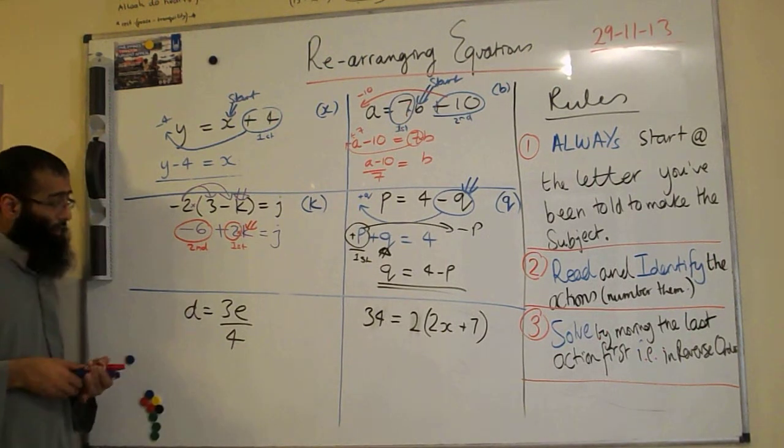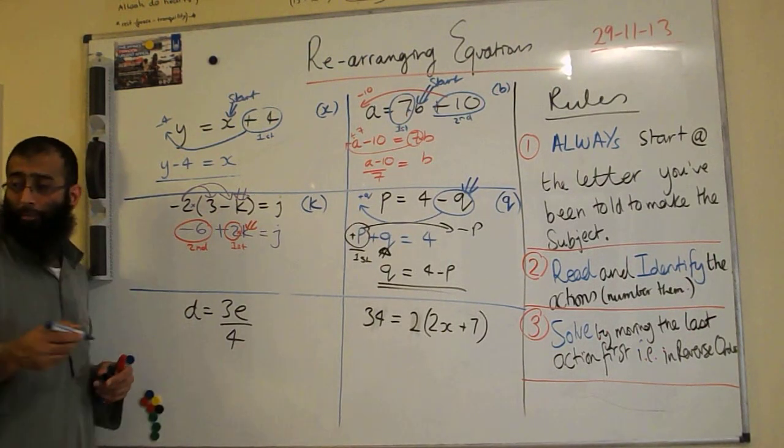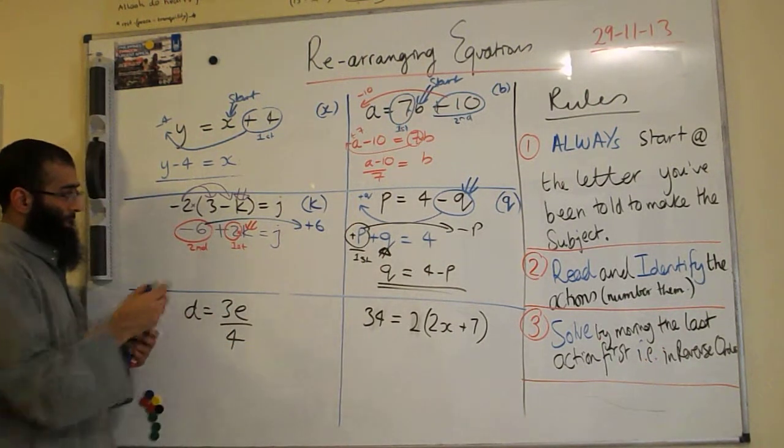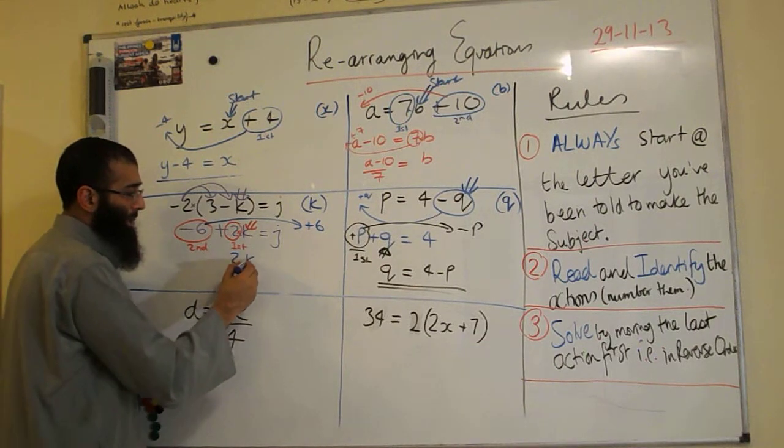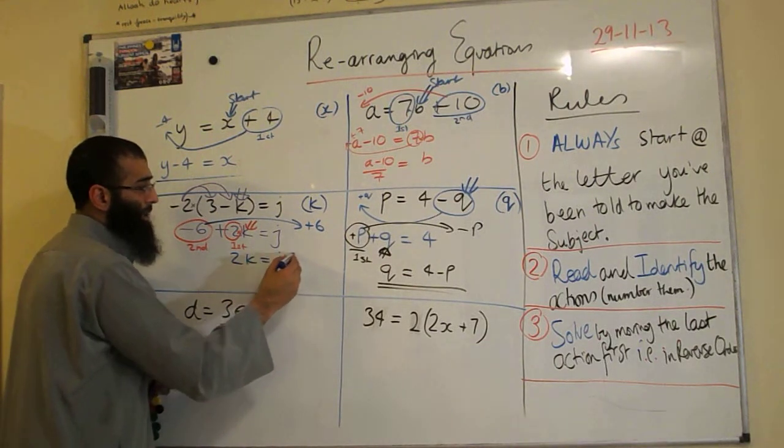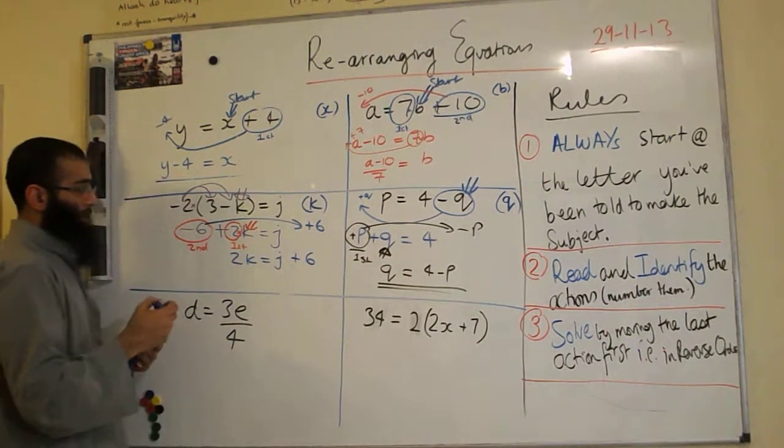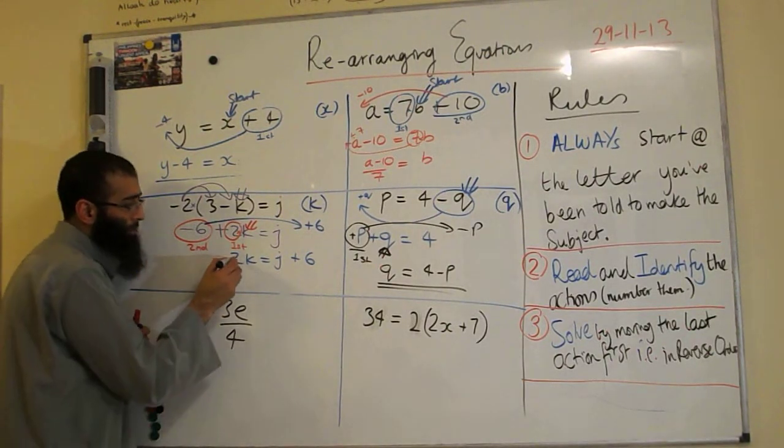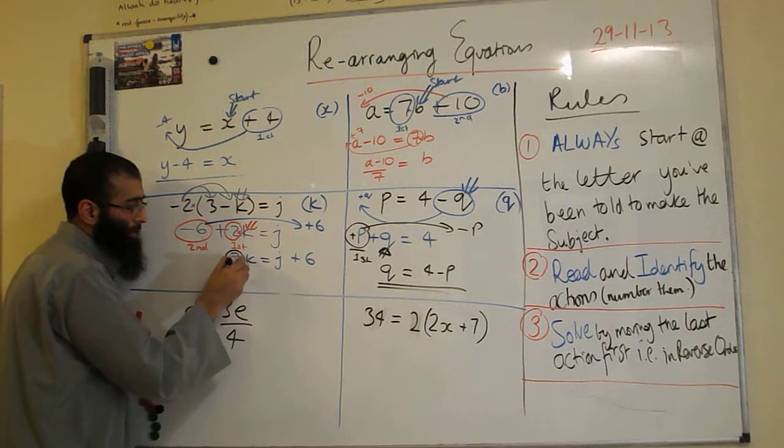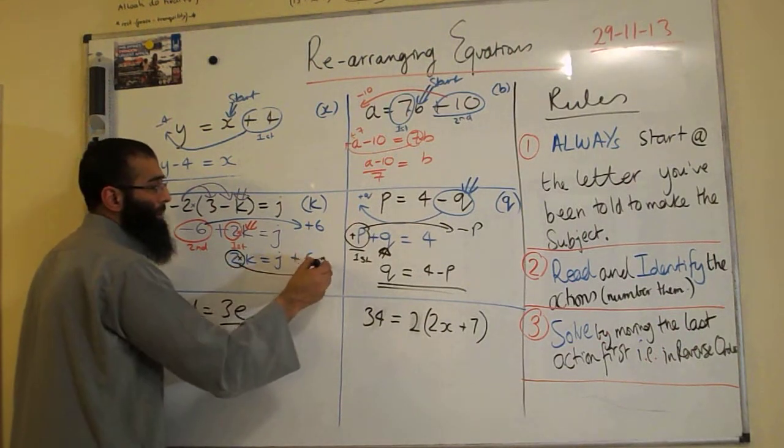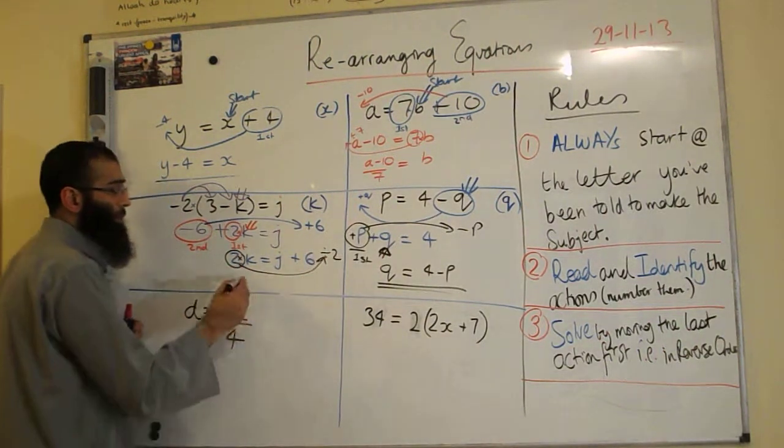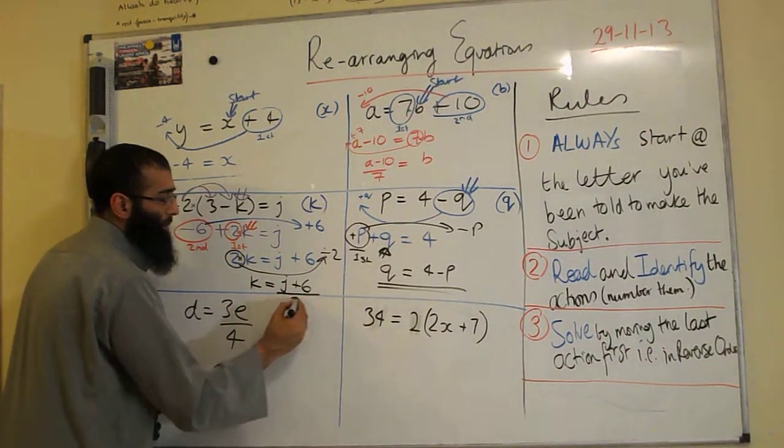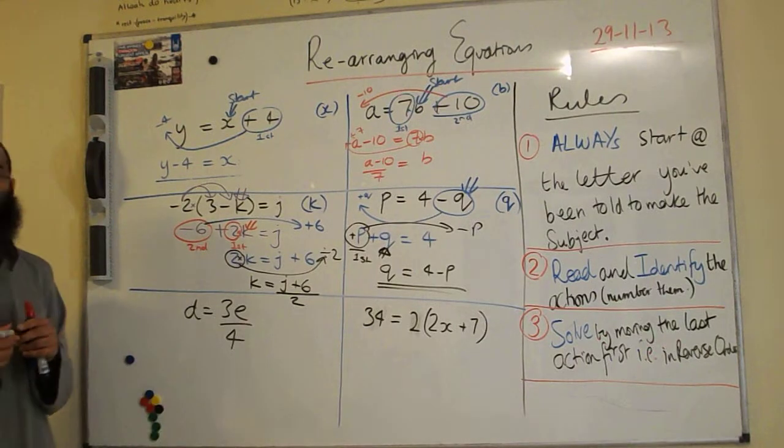Ifrah, which action do I move first? Second. So opposite of minus 6 is add 6. So we got now 2K is equal to J add 6. Saif, what's happening over here? We have a time by 2. The opposite time by 2 is divide by 2. So K is equal to J plus 6, all of it divided by 2. And not just the plus 6 divided by 2. That's very important too folks.